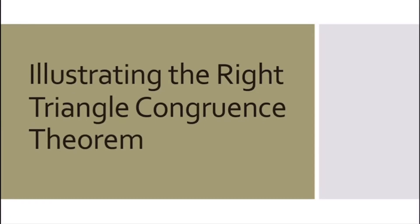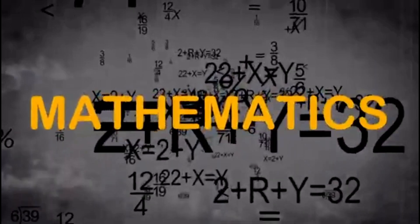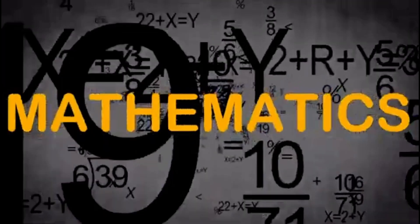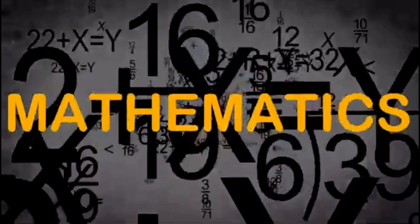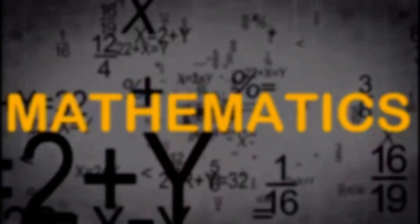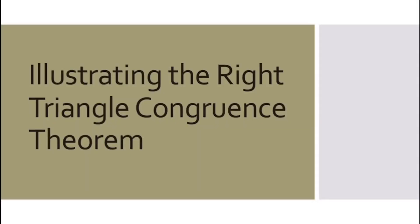Our lesson for today is all about illustrating the right triangle congruence. Triangle congruence may be applied using right triangles. The parts of the triangle like legs, acute angles, and hypotenuse can be paired so that the two right triangles are congruent.